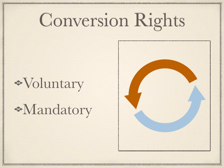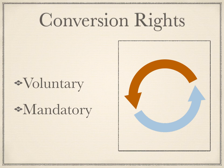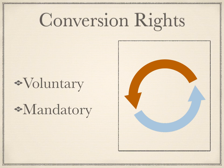The second type of mandatory conversion is upon approval of a majority or sometimes supermajority of the preferred shares. Upon approval by a sufficient number of preferred shares, all the preferred shares must convert into common stock. This allows the consensus of the group to compel all preferred shareholders to act together on conversion in circumstances where terminating the preferred stock rights is the best course of action for the entire company. This would not work if it required a unanimous vote because it would give every preferred stockholder a veto. So typically mandatory conversion on approval is at the election of a majority or supermajority.